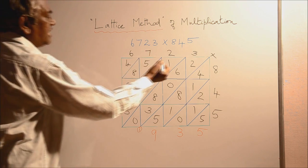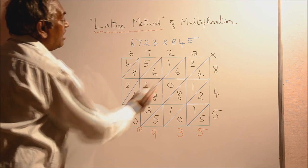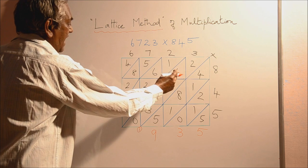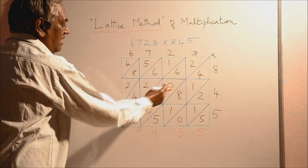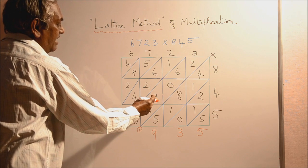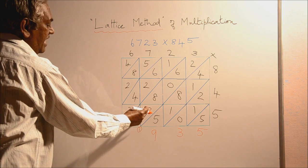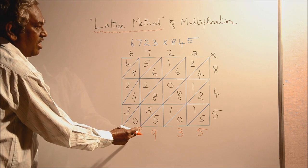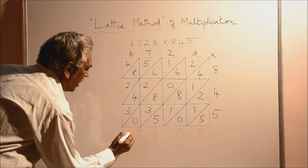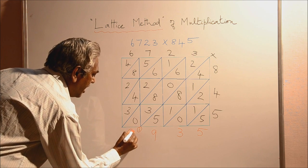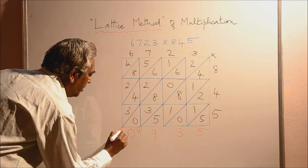Now, we go to the next diagonal. We are adding up. 2 plus 6, 8, 0, 8. Then 8 plus 8, 16. Plus 3, 19. Then this 1 carried over, 20. So write 0 here. Then 2 to be carried over.